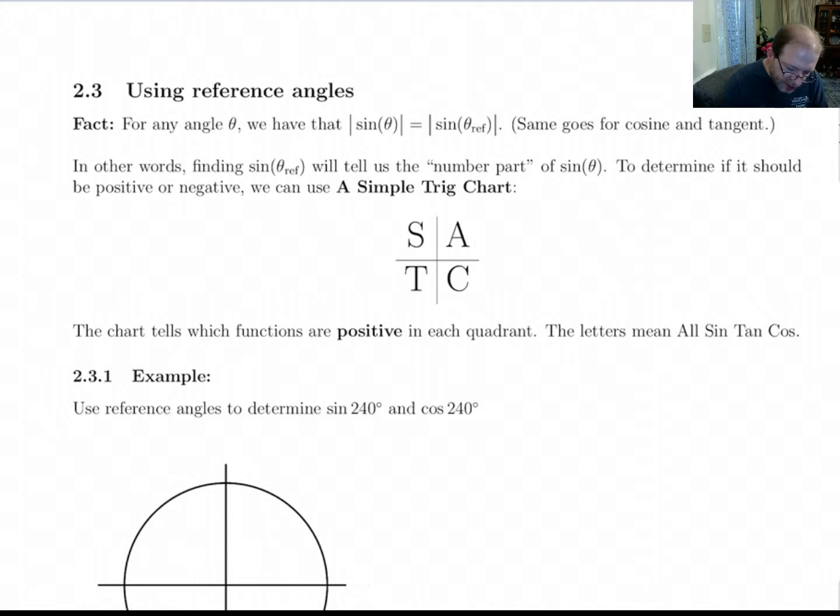The fact says that if you're given any angle theta, the sine of theta, if you take its absolute value, that's the same as the absolute value of the sine of theta's reference angle. And I'm just using sine here as an example. It also works for cosine and tangent. But that's not the clearest way in the world to say that.